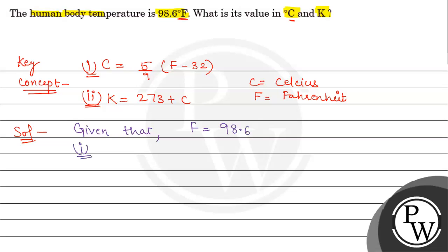First we find Celsius. C = 5/9(98.6 - 32). On solving this we get the value as 37.